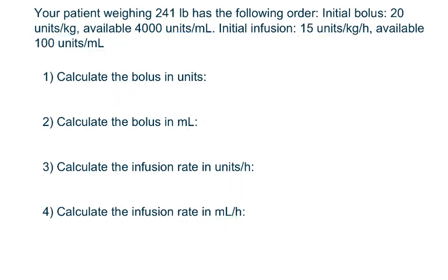For the third problem, the patient weighs 241 pounds, with an order for an initial bolus of 20 units per kilogram with 4,000 units per milliliter available, and an infusion of 15 units per kilogram per hour with 100 units per milliliter available.